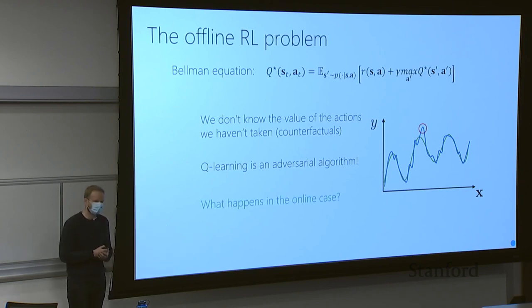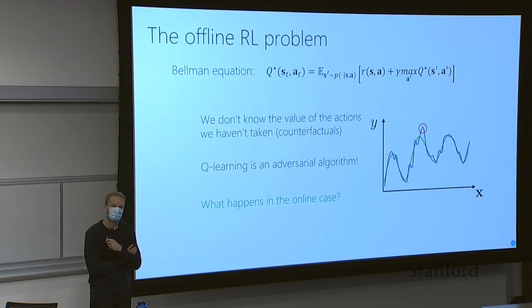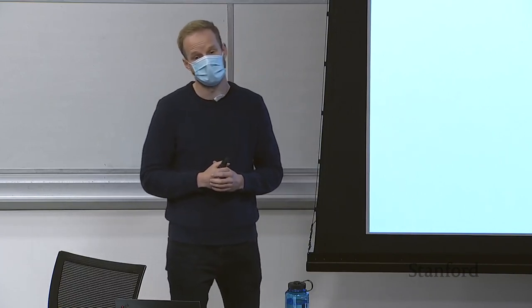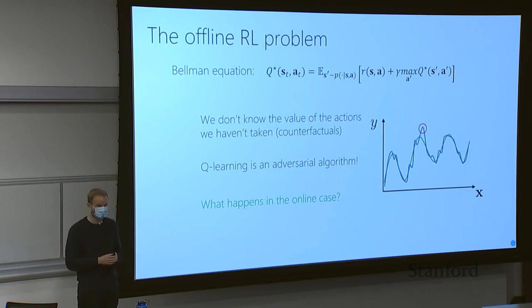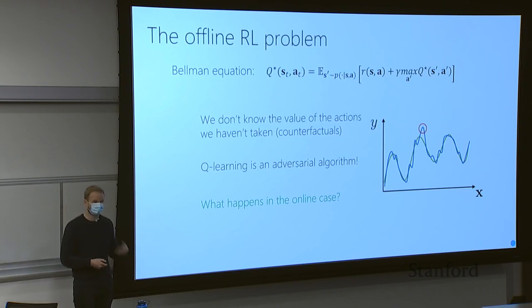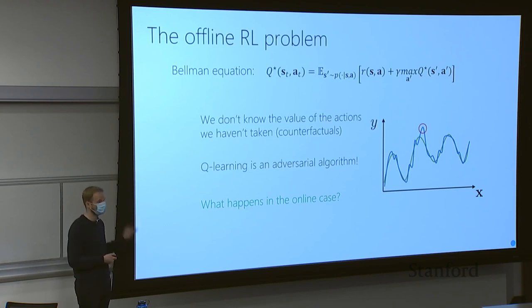In the online case, this is not a problem: we still think the overestimated action is best, but in the next iteration we actually take that action and observe that the reward isn't that high. We then fit the curve better, pushing it down because we experience the actual reward. This online active correction process keeps the Q function accurate. In the offline case, we don't have access to that correction — we can't fix these errors.